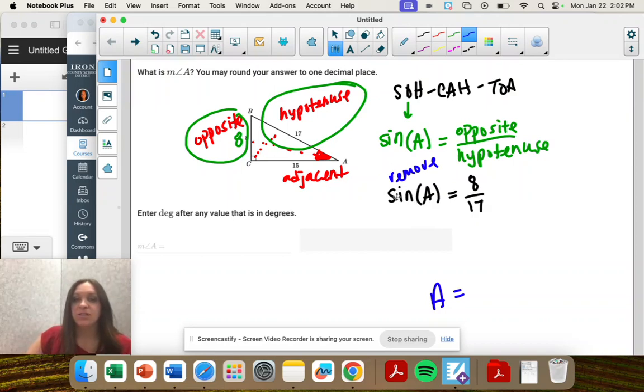The opposite of sine is sine inverse, and we write it like this, sine negative 1. And what we do to one side, we do to the other, and those cancel out.